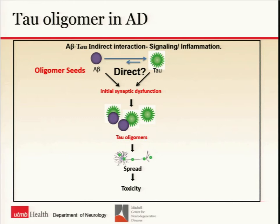Many people think A-beta is upstream of tau, or they interact simultaneously in Alzheimer's. There is elegant work from Leonard Mucke and others implicating Fyn kinase and other signaling. Our hypothesis is that there is also a direct interaction between the aggregates — if you take A-beta and add it to tau, it aggregates much faster. We are focusing on this direct interaction while acknowledging indirect interactions also exist.